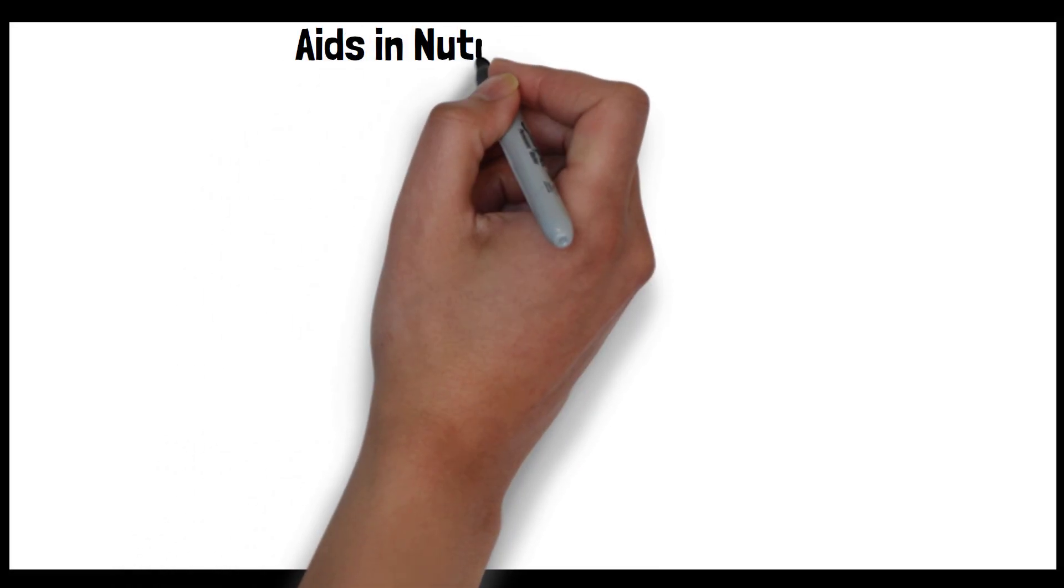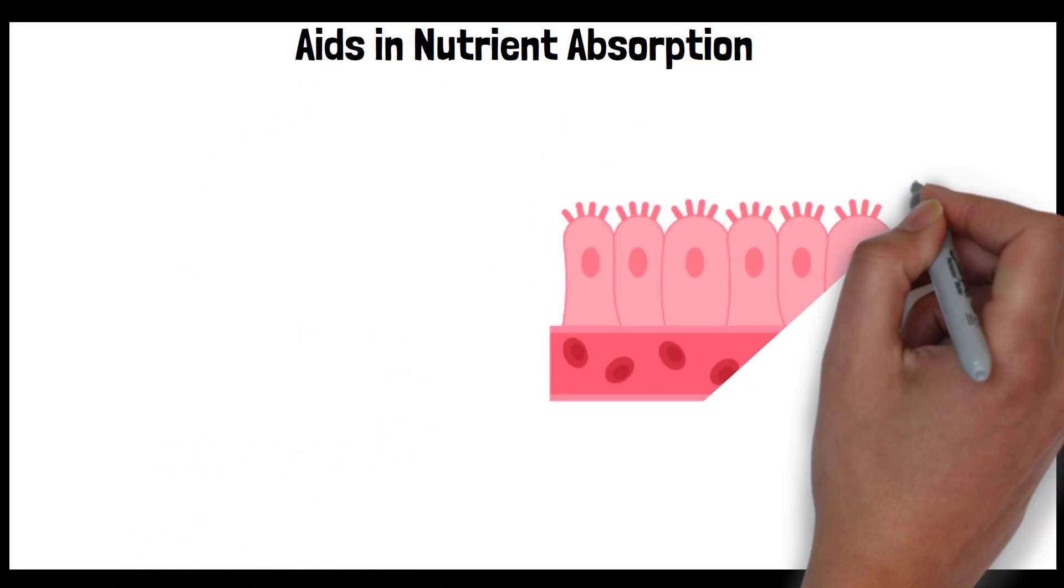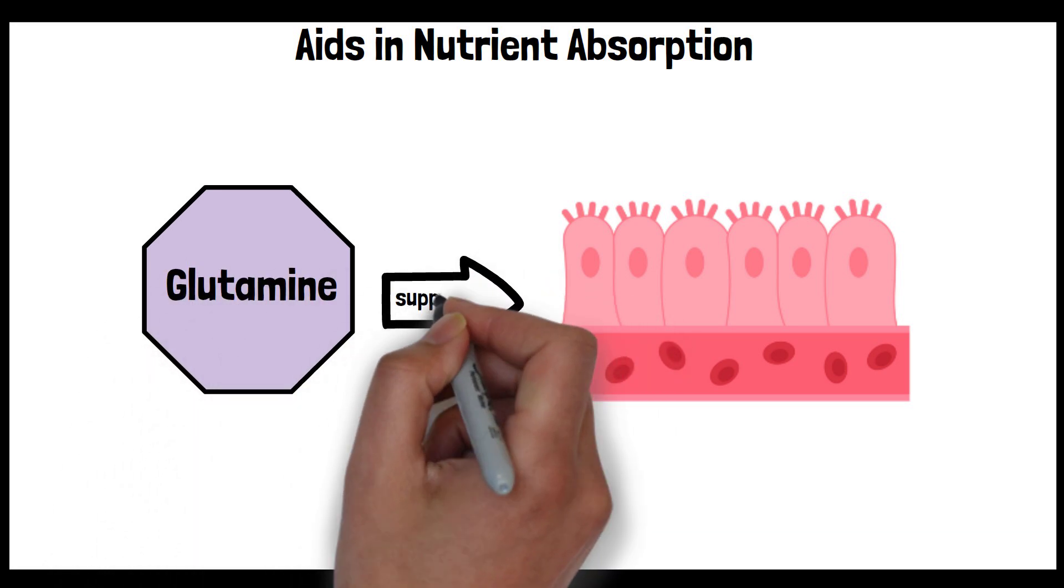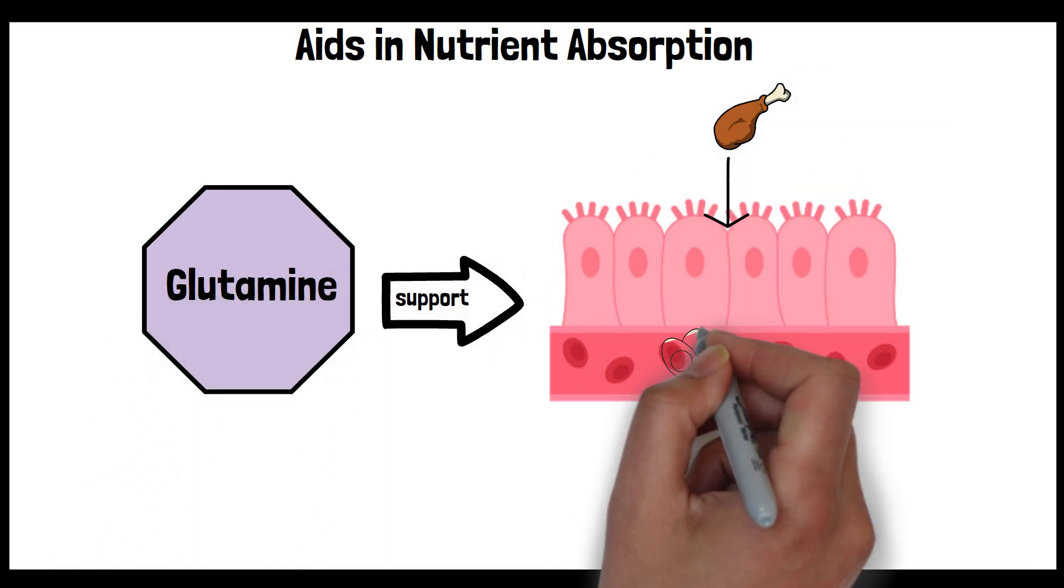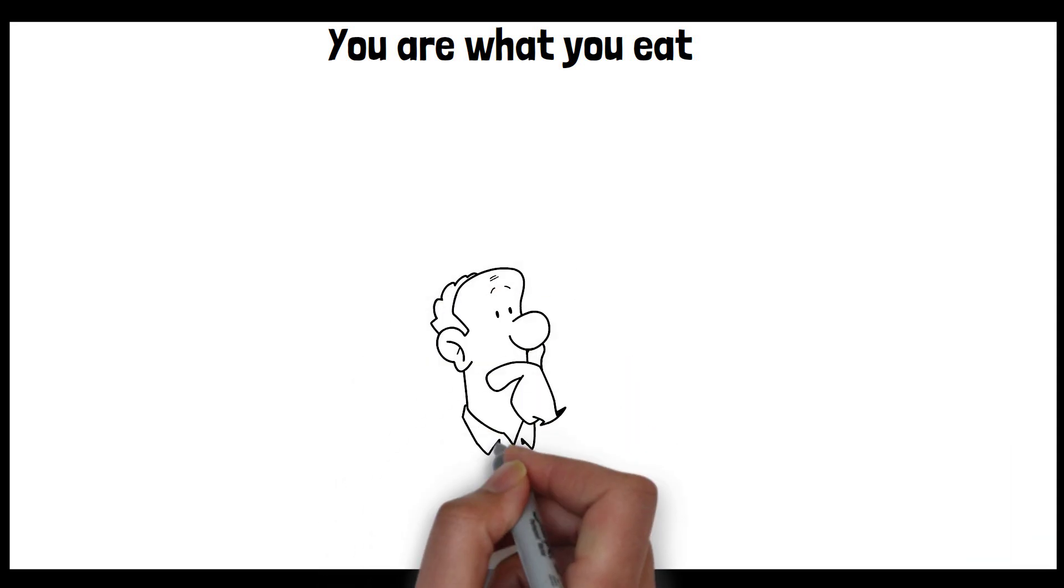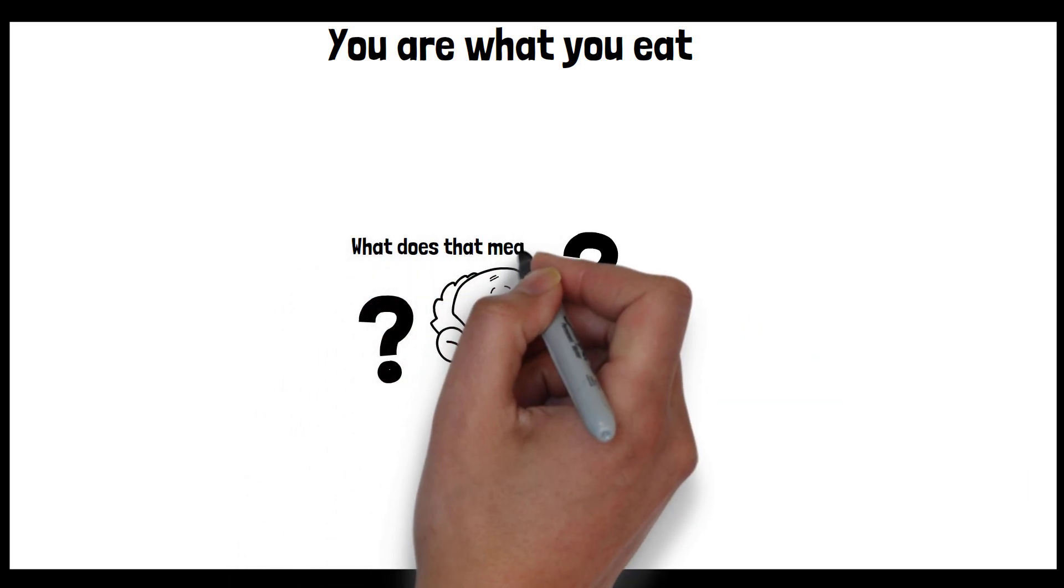Ten, aids in nutrient absorption. Efficient nutrient absorption is vital for overall health and requires a healthy gut lining. Glutamine supports the integrity and function of the gut lining, ensuring that nutrients from the food you eat are effectively absorbed into the bloodstream. You've probably heard of the expression, you are what you eat, but did you ever stop to think what that actually means?